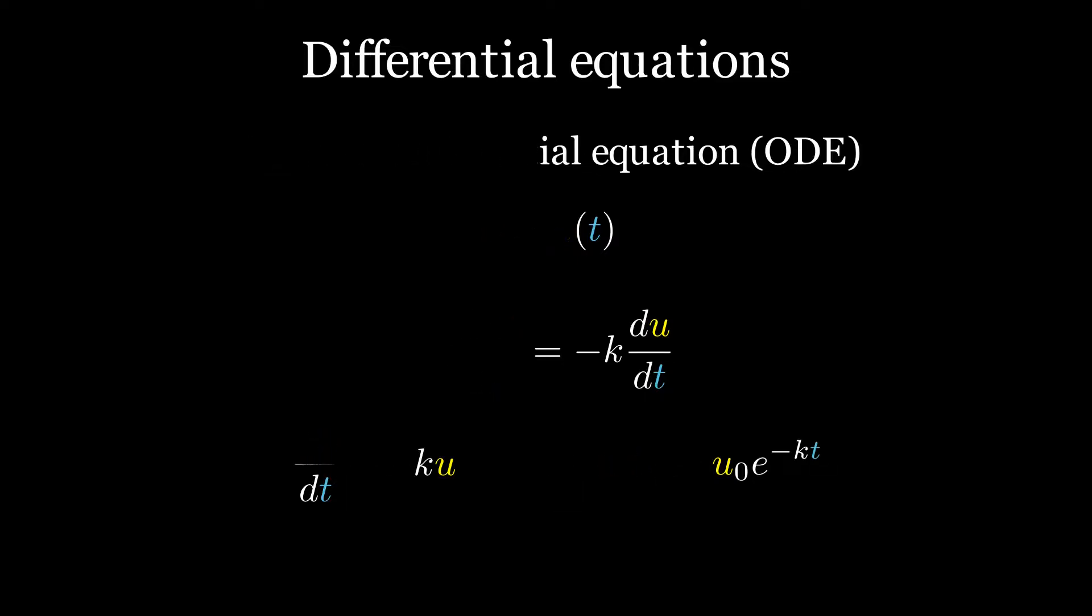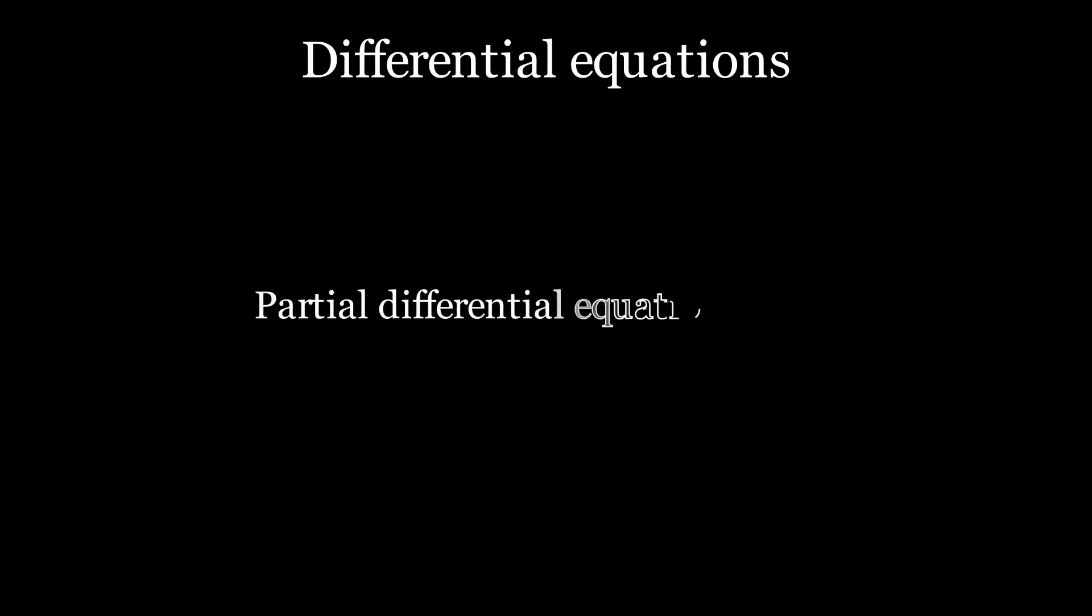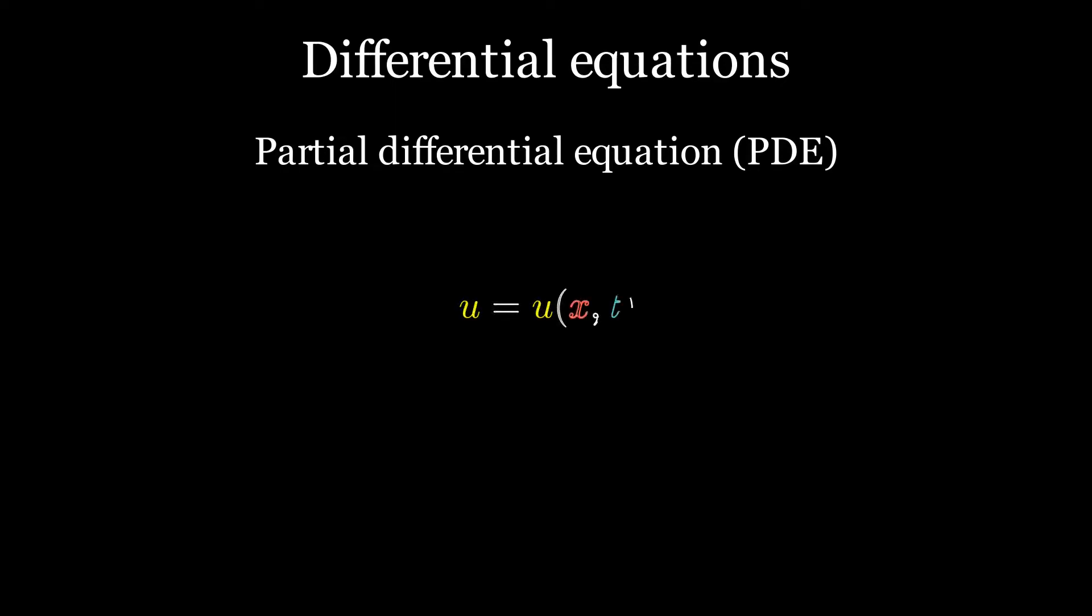A partial differential equation, or PDE in short, is a differential equation where the unknown is a function of a few independent variables. So a PDE contains multivariable functions and their partial derivatives. If U is a function of X and T, let's say space and time, a PDE describing U can be like this, which is the famous heat equation with U being the temperature.